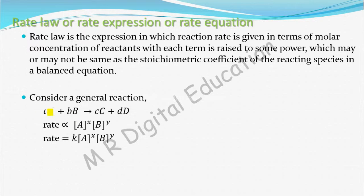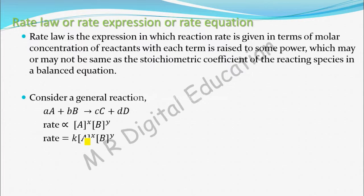The stoichiometric coefficient of reactant A is 'a', and the stoichiometric coefficient of reactant B is 'b'. The power X may or may not be equal to 'a', and Y may or may not be equal to 'b'. That is the meaning. So once again, the definition: rate law is the expression in which reaction rate is given in terms of molar concentration of reactants, with each term raised to some power which may or may not equal the stoichiometric coefficient of the reacting species in a balanced equation.